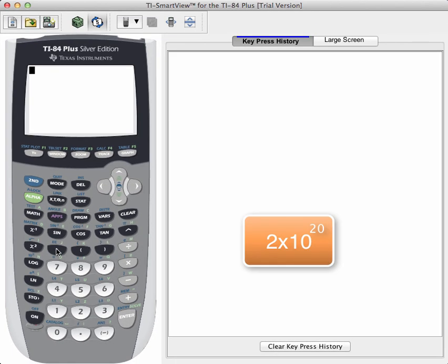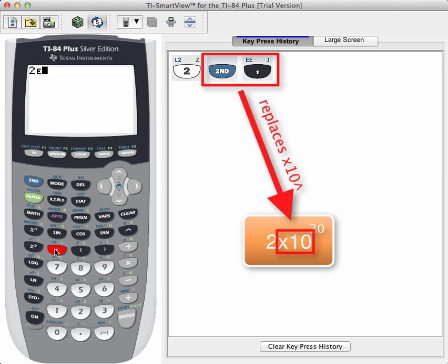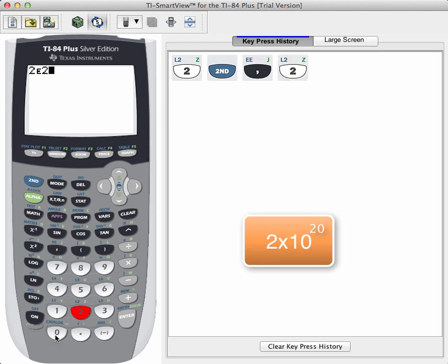So to enter that in properly then, that same number, 2 times 10 to the 20th, we'd enter in 2 and then we'd hit second comma and as a result we get that little e there. And that little e means times 10 to the. So the only part we have to add in left is what the actual exponent is, which in this case is the number 20.